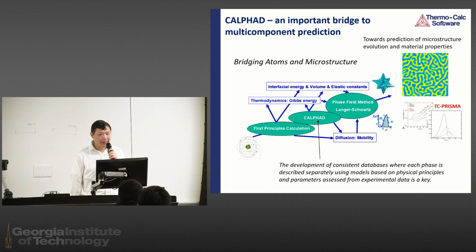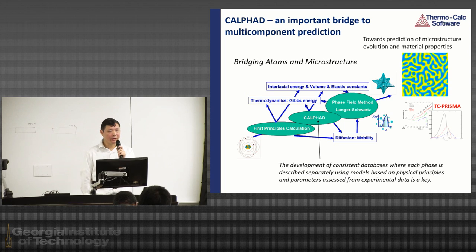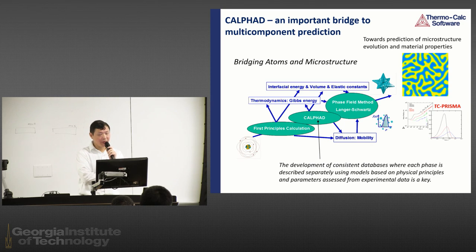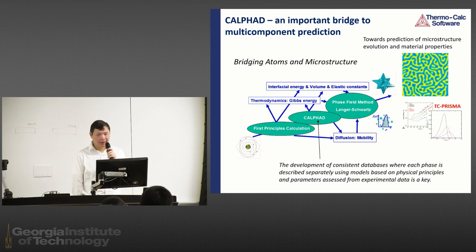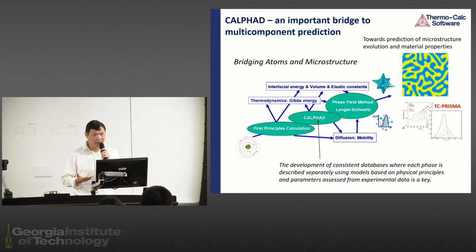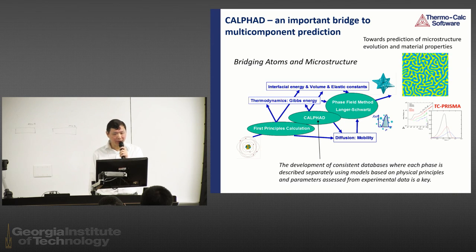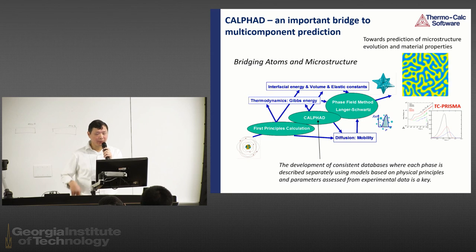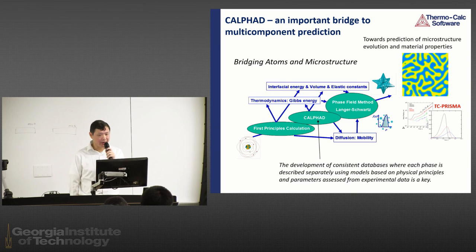In the ICME framework, CALPHAD can serve as an important bridge for multi-scale model computation and prediction. We can collect data from first-principles calculations, then collect Gibbs free energy data, enthalpy data, interface energy data, elastic constant data, et cetera, to build up databases. We then provide software to pass this data to larger-scale calculations like phase field methods, diffusion-transformation calculations, or Langer-type mean-field approaches to precipitation kinetics. Based on that, we can move up to yet another scale for FEM or fluid dynamics calculations.